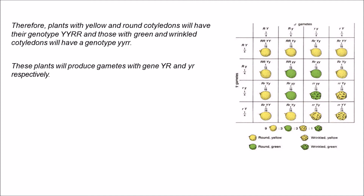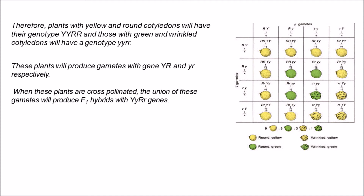These plants will produce gametes with genes YR and yr respectively. When these plants are cross-pollinated, the union of these gametes will produce the F1 hybrids with genotype YyRr.